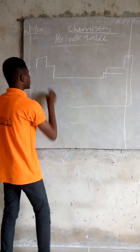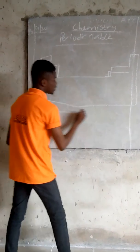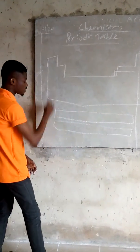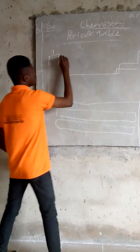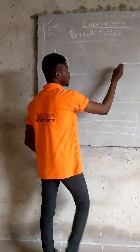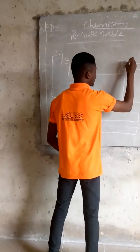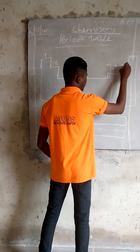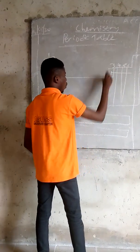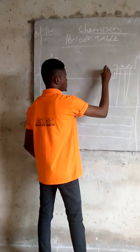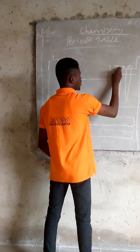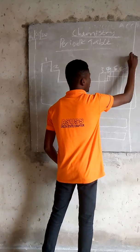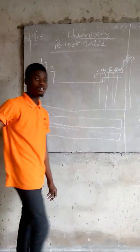The periodic table is divided into groups and periods. The periodic table has 8 groups and 7 periods: 1, 2, 3, 4, 5, 6, 7, and 8. Group 8 is also called Group Zero.